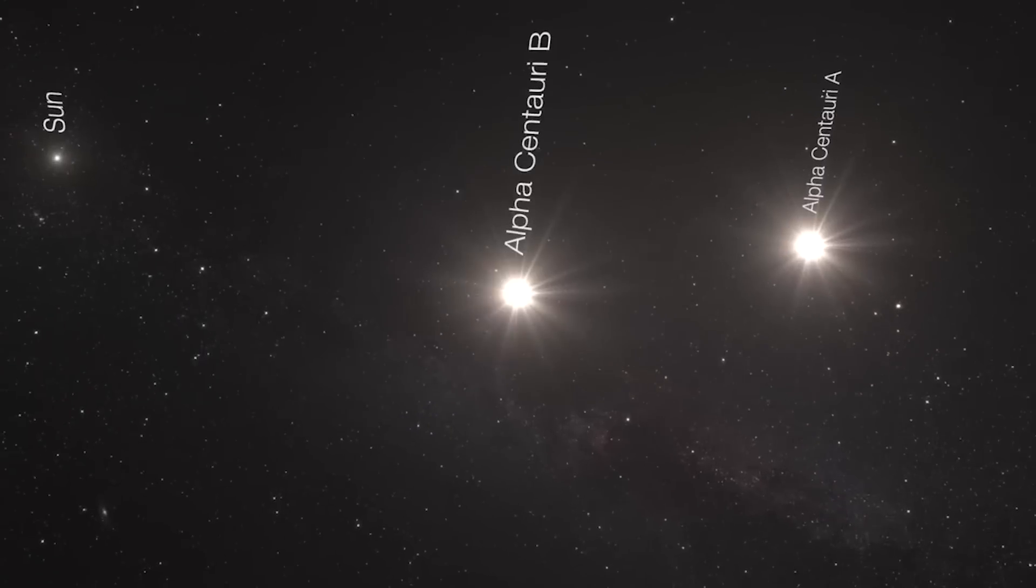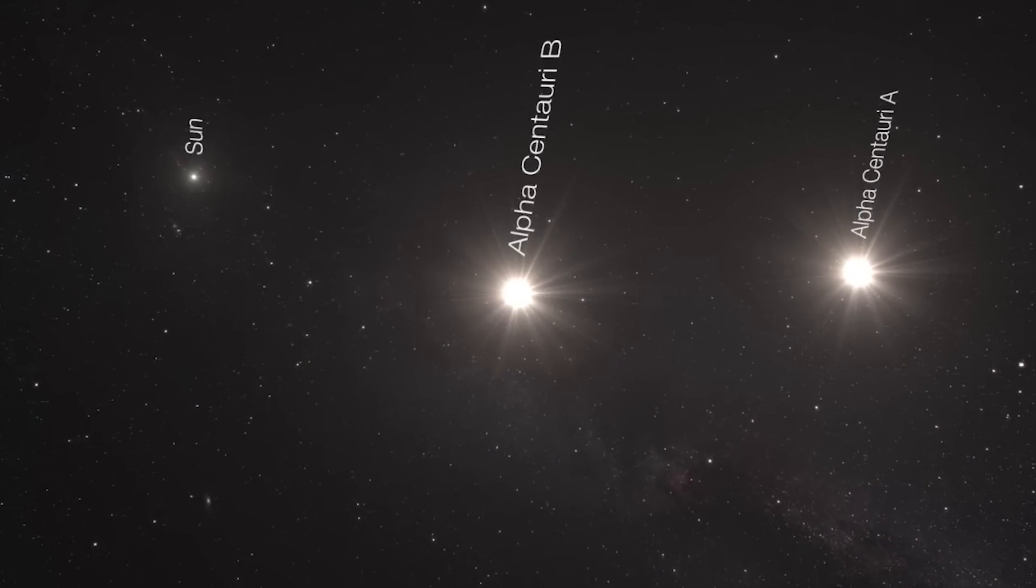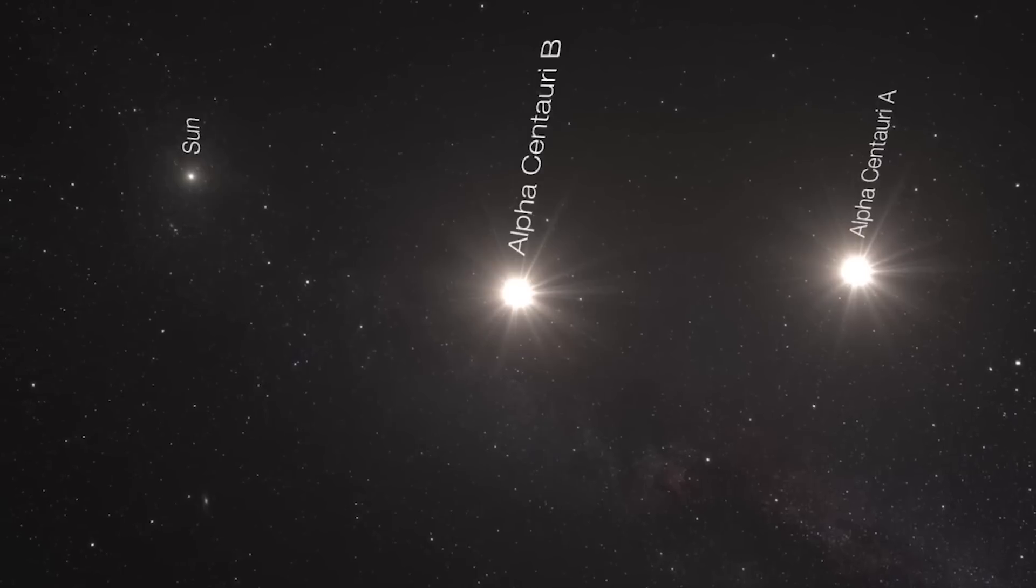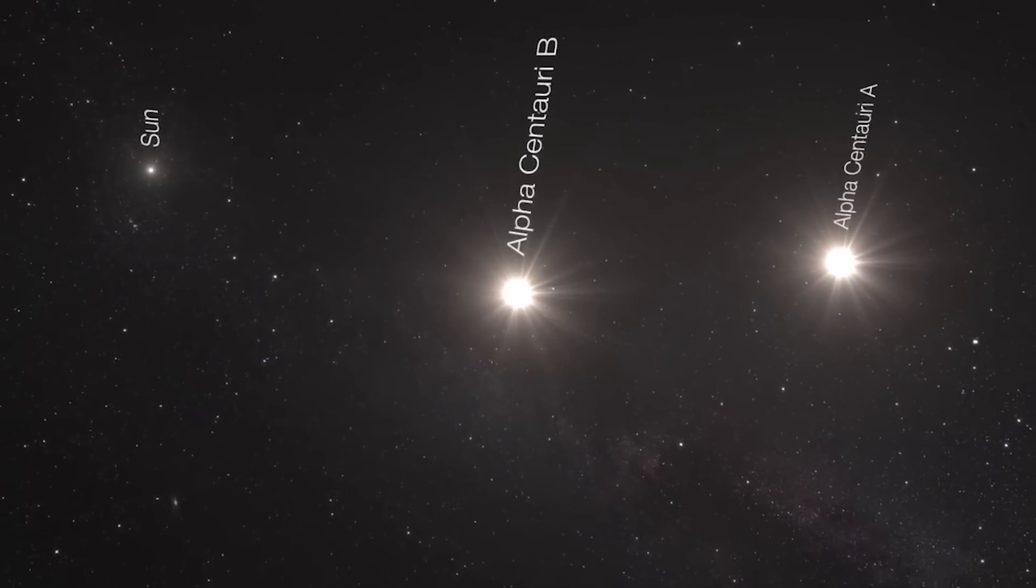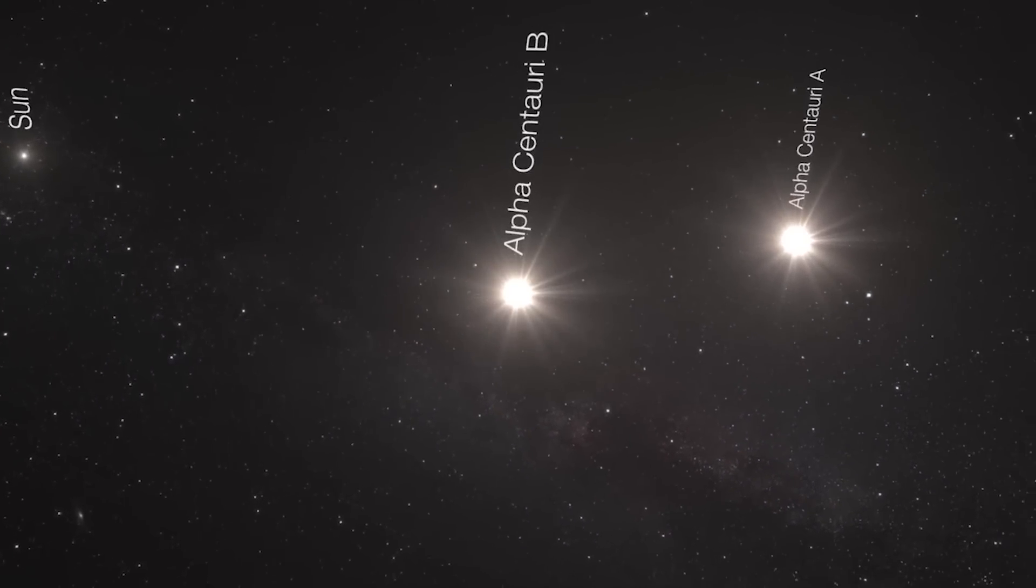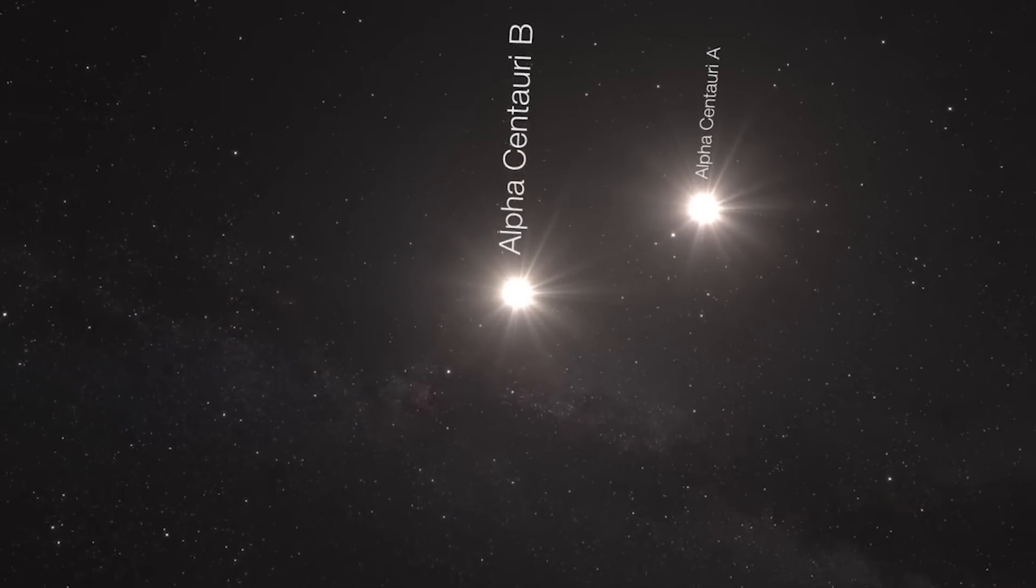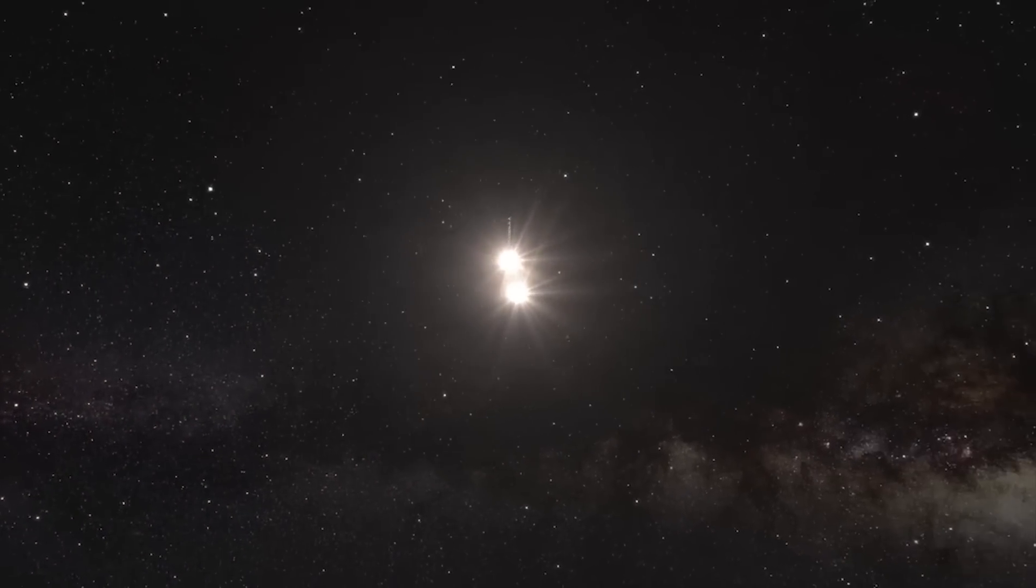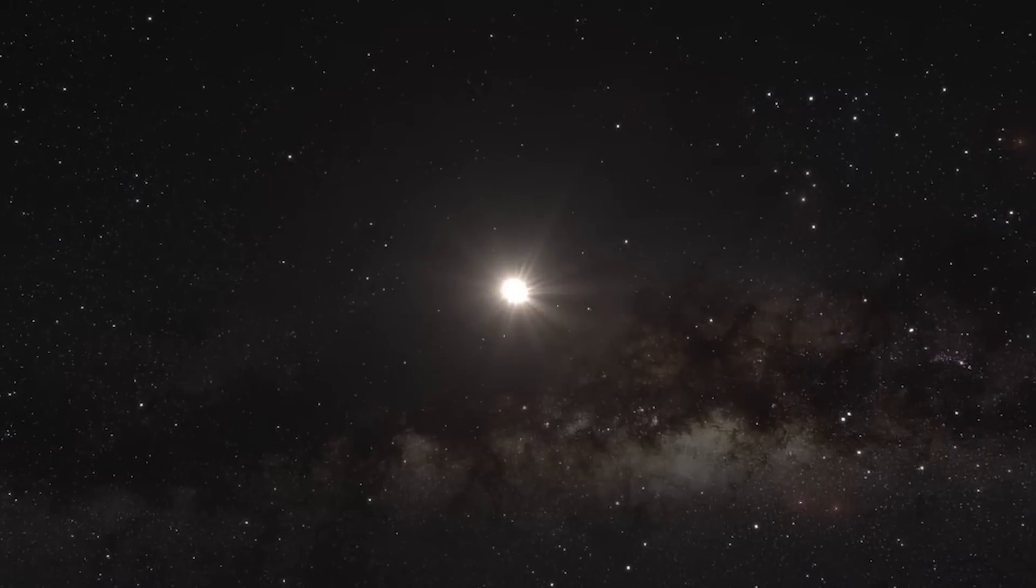The signal comes from a triple star system composed of the binary pairs of Alpha Centauri A and B and Alpha Centauri C, also known as Proxima Centauri. Alpha Centauri A and B, the two stellar companions, are relatively close to each other and are quite similar to the sun.